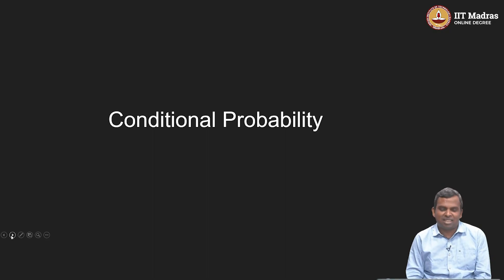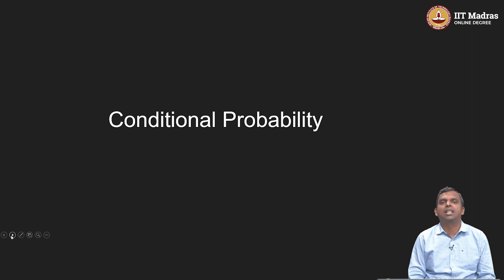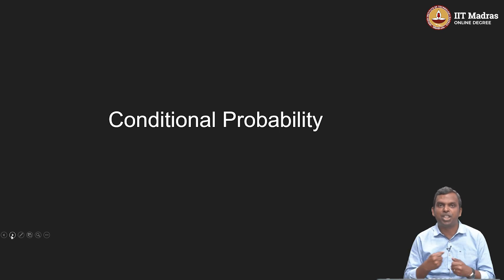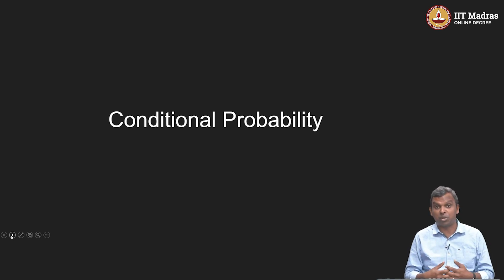Hello and welcome to this lecture on conditional probability. So far we have been talking about probability space where we had an experiment and an outcome. We had the sample space, which was very important, and there was a collection of events. We had a probability function which needed to satisfy these axioms and we are able to do calculations with events.